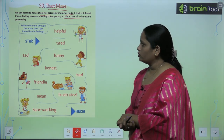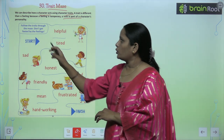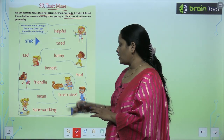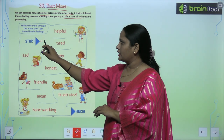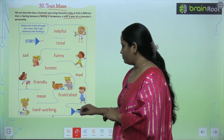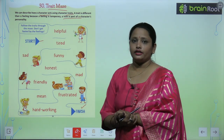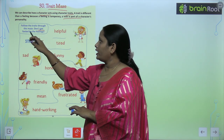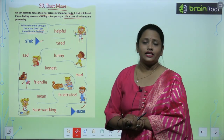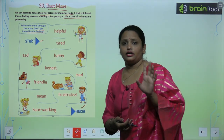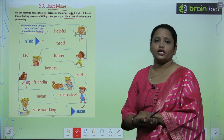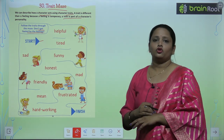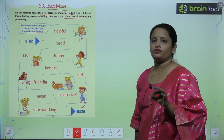What you have to do is follow the traits through the maze. This is a maze — you have to start here and finish here. You have to follow traits. Don't get fooled by the feelings. Don't touch the feelings; you have to follow the traits.